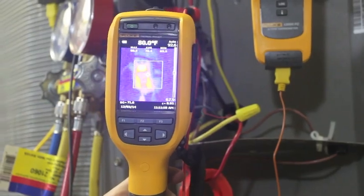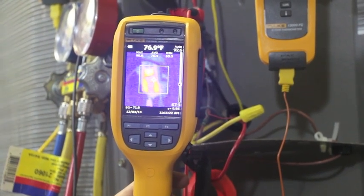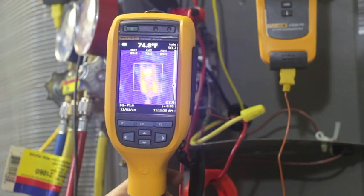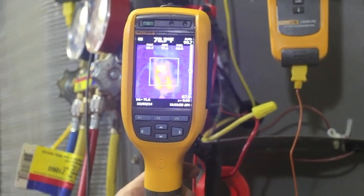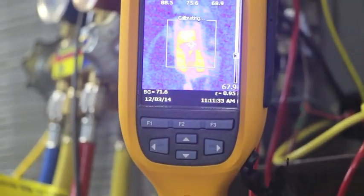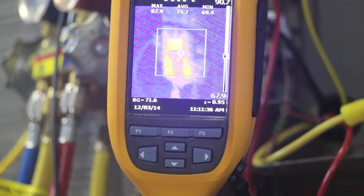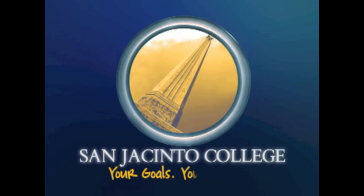Starting up the compressor, we saw low voltage, so we used the thermal imager and found a loose connection. As you can see, the connection is glowing. We're going to stop and correct this problem and then proceed.